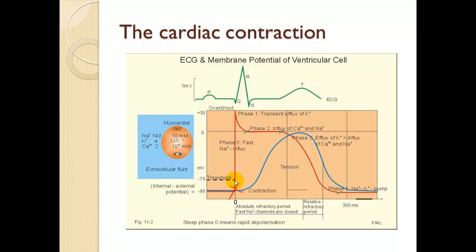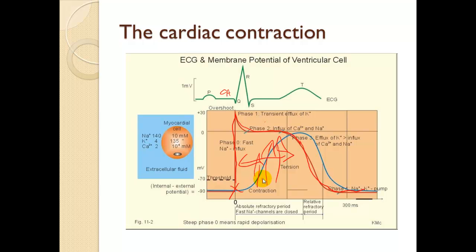The contraction has already been initiated — calcium kicks it off first. Then we get an influx of sodium, which changes the voltage in the cell and causes muscle cells to contract in phase one. Then we get an efflux of potassium from inside to outside the cell. During phase two, we get an influx of calcium and sodium, and we normalize through the sodium-potassium pump. The calcium influx creates a better, prolonged contraction. Calcium is essential in cardiac contraction.